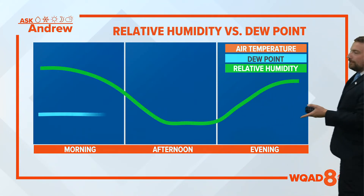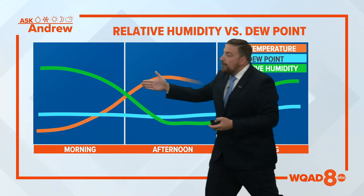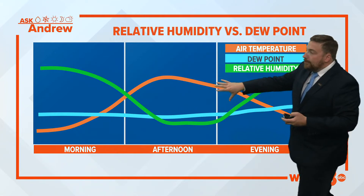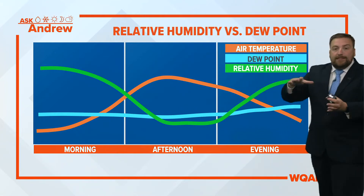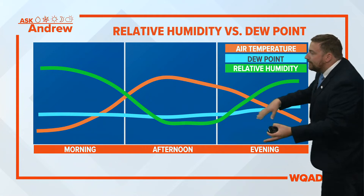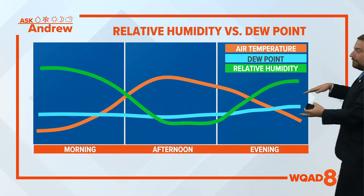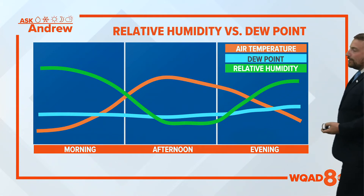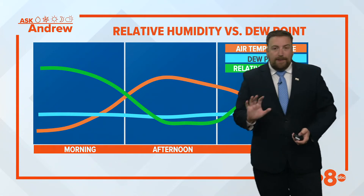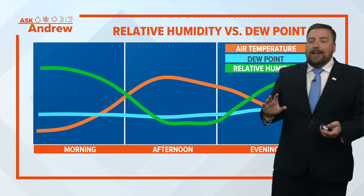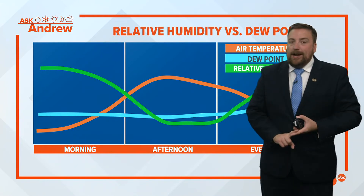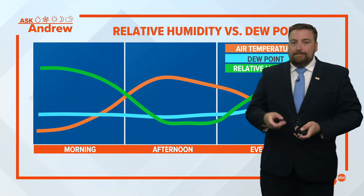In this example, here's how it changes as we go throughout the day. In the morning the relative humidity is high; it begins to lower during the day because our temperature begins to increase, so that drier air comes in. Then the opposite happens again as we head into the evening.